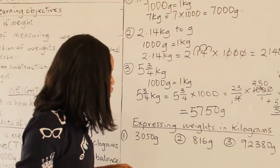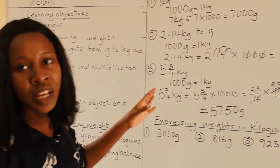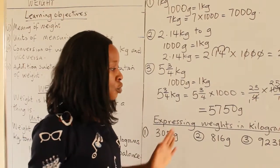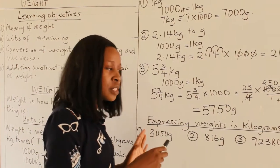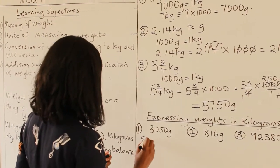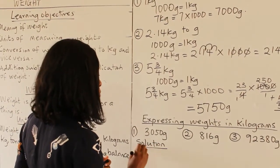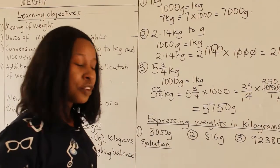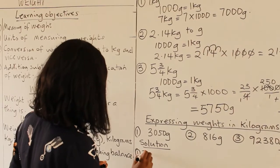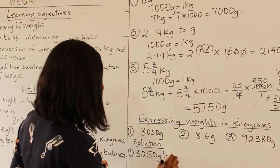Next, we'll be learning how to express weight in kilograms — converting from grams to kilograms. The first question is: express 3,050 grams in kilograms.